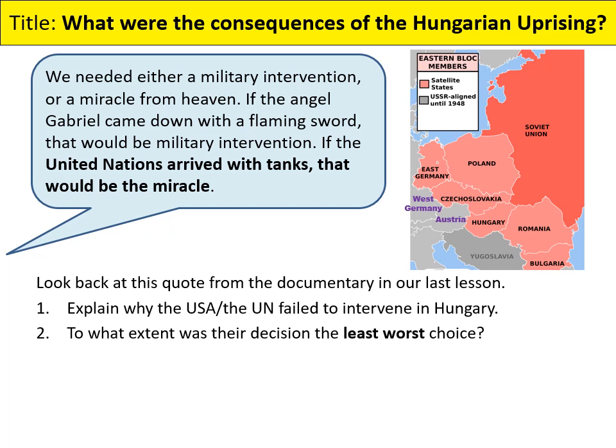There's a quote from the documentary from last lesson: 'We needed either a military intervention or a miracle from heaven. If the angel Gabriel came down with a flaming sword, that would be military intervention. If the United Nations arrived with tanks, that would be the miracle.' You can see the dark humour of Hungarians at this time — the idea that they'd lost all faith in the UN or the West helping them. Some real military help would be if God sent down angels to crush the Soviets.